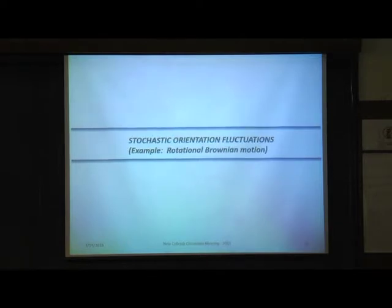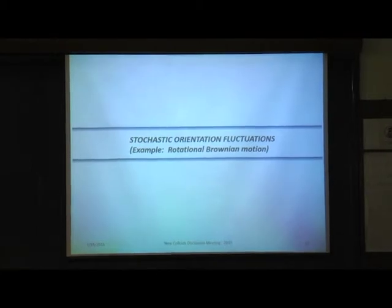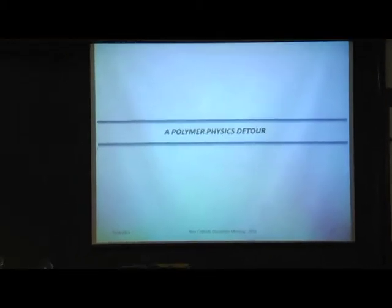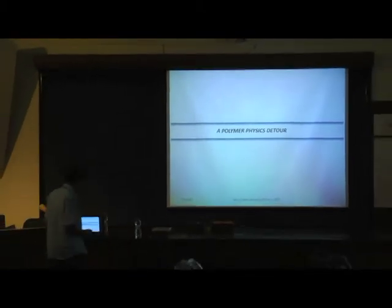To resolve this, stochastic orientation fluctuations are needed — an example being rotational Brownian motion, but fluctuations could also be induced by interactions between spheroids. To understand how this works, we take a detour through a similar problem in polymer physics.